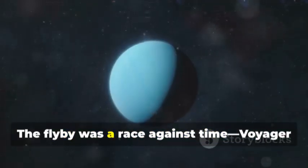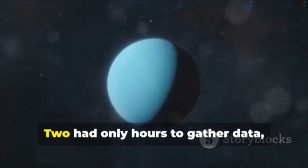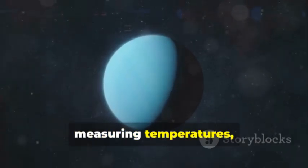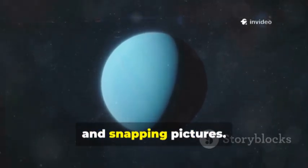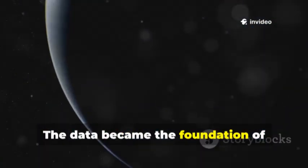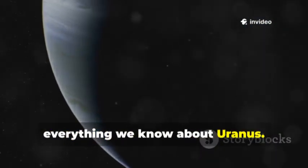The flyby was a race against time. Voyager 2 had only hours to gather data, measuring temperatures, mapping the magnetic field and snapping pictures. The data became the foundation of everything we know about Uranus.